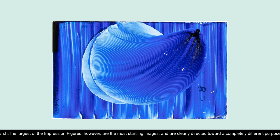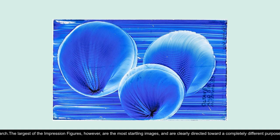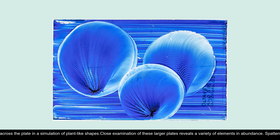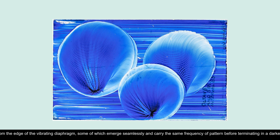The largest of the impression figures, however, are the most startling images and are clearly directed toward a completely different purpose. Rather than recording only pitches, although many of these images do contain elements of pitch-derived patterns, these images consist of complex reticulations and textures which are smeared and manipulated across the plate in a simulation of plant-like shapes. Close examination of these larger plates reveals a variety of elements in abundance. Spatters and unexpected ruptures burst from the edge of the vibrating diaphragm, some of which emerge seamlessly and carry the same frequency of pattern before terminating in a darker patch of higher pigment density—a profusion of serpentine emissions emerging from the central figure body, visually, although perhaps not mathematically, prescient of fractal graphical production.